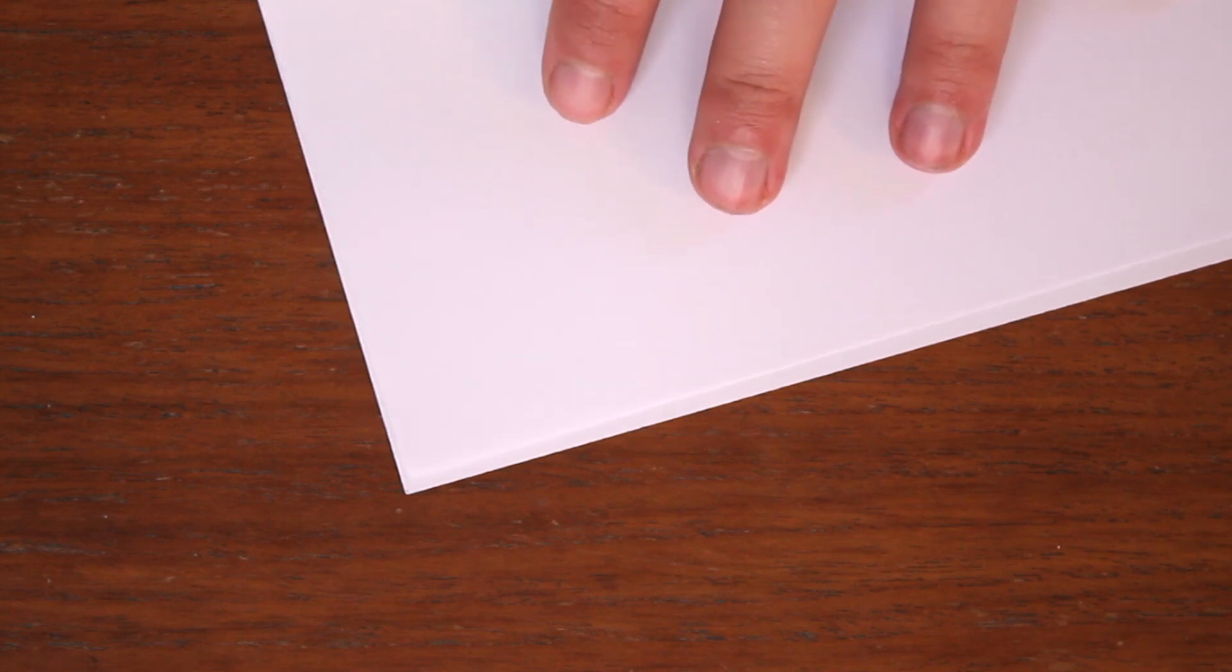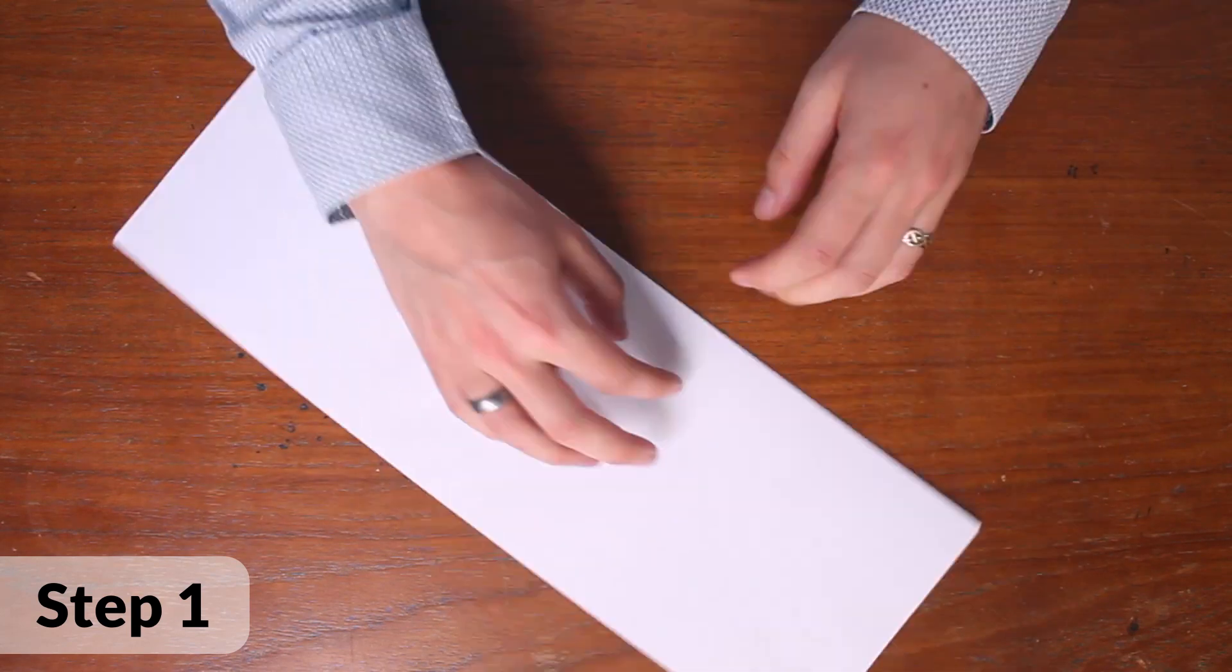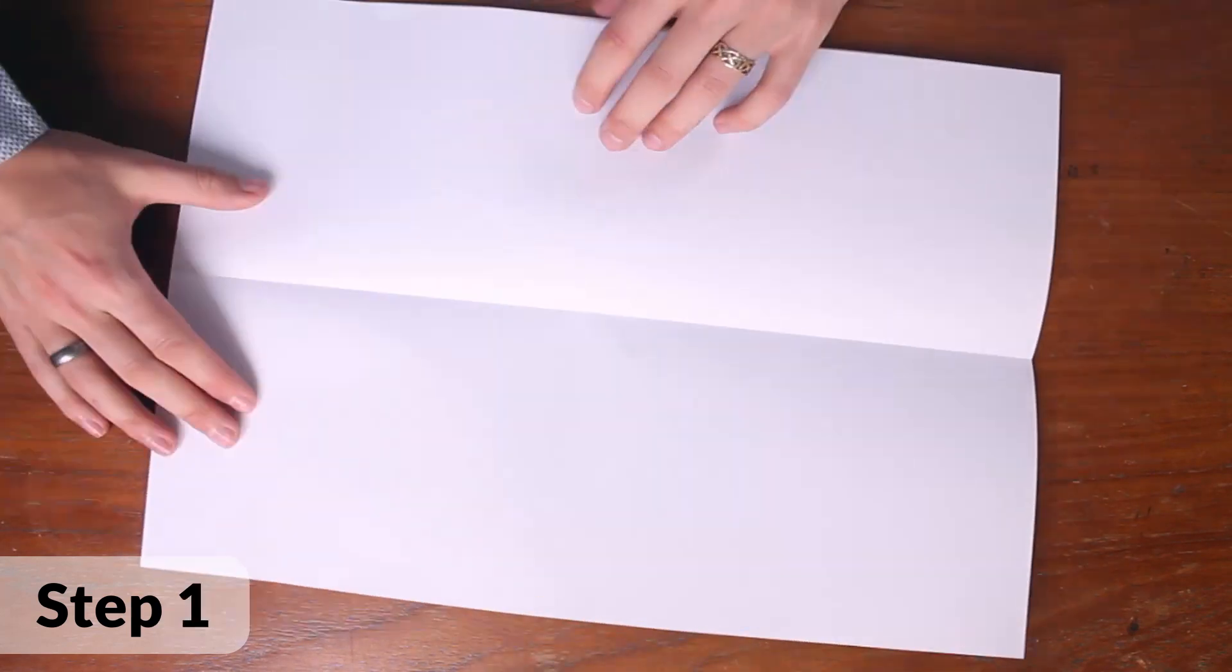By the way, the trick to getting neat folds is to make sure that the edges line up perfectly and that you don't let them move whilst you fold. Open the paper back up and you should now have a fold down the middle of the paper.